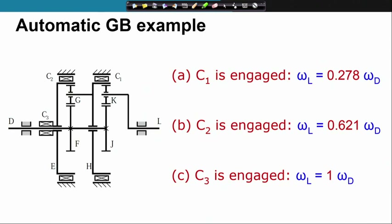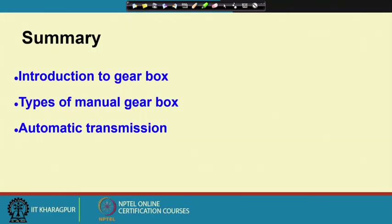To recapitulate: when C1 is engaged, the transmission ratio is 0.278; when C2 is engaged, the transmission ratio is 0.621; and when C3 is engaged it is 1. That concludes our discussions on the automatic gearbox example. We have introduced gearboxes, discussed manual gearboxes — sliding mesh, continuous mesh, and synchromesh — and under automatic transmission we calculated transmission ratios using the general kinematic formula derived for epicyclic gear trains. With that, I will conclude this lecture.